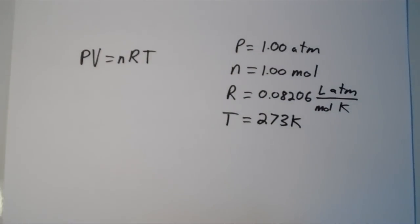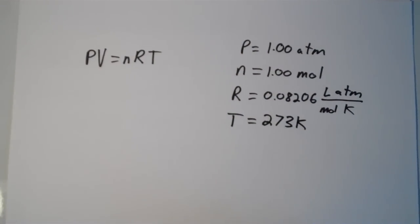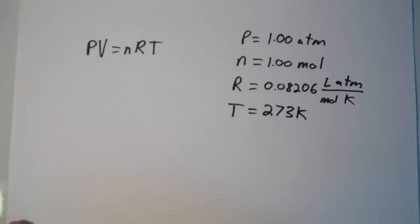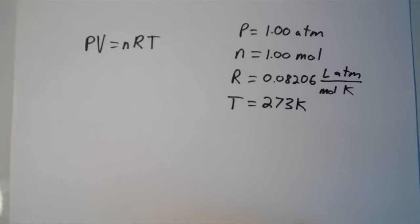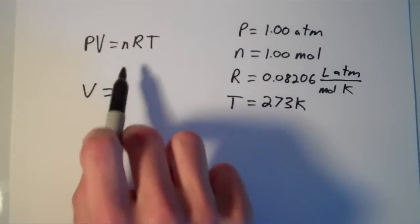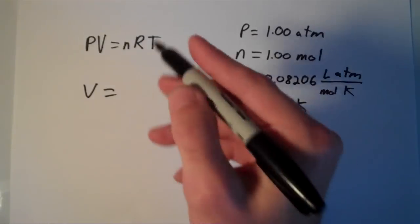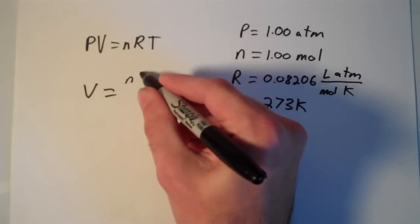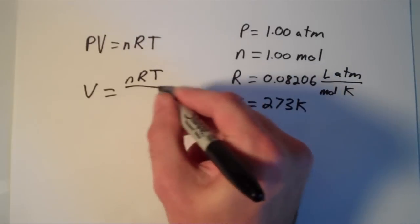So now we have all the pieces. We just need to algebraically solve for the volume. So if we do this, I'll get that my volume is equal to—we're going to divide both sides of the ideal gas law equation by P to arrive at V is equal to nRT over P.